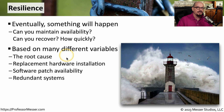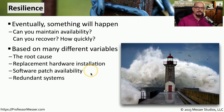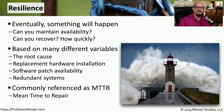If hardware is our issue, we may need to replace that hardware. If the issue is with software, we would need to provide a patch or a fix for that software. And if there are redundant systems, we may need to install or replace those redundant components. One good measurement of resilience is MTTR, or mean time to repair. This describes the length of time that it would take to replace something that is no longer available with components that are available.